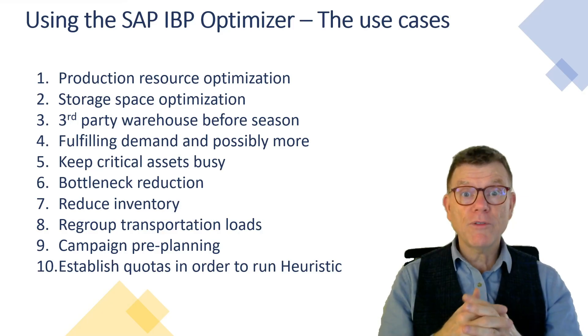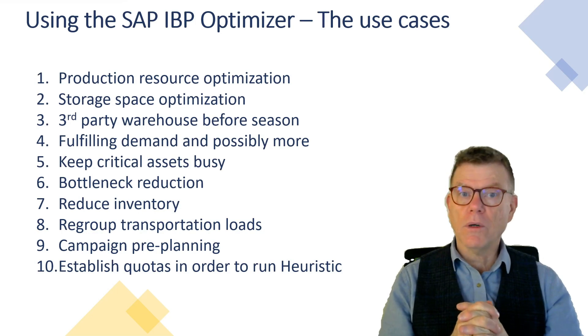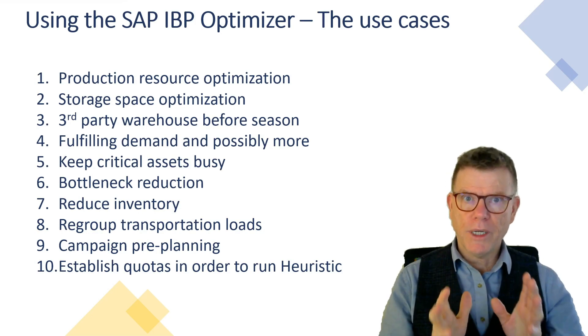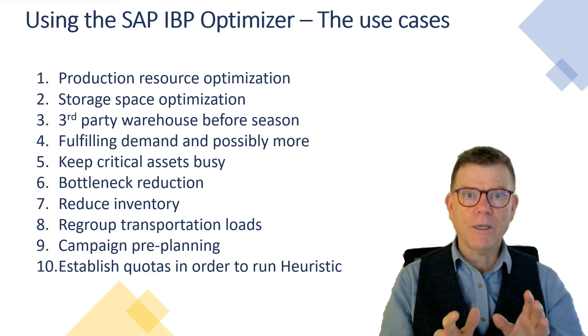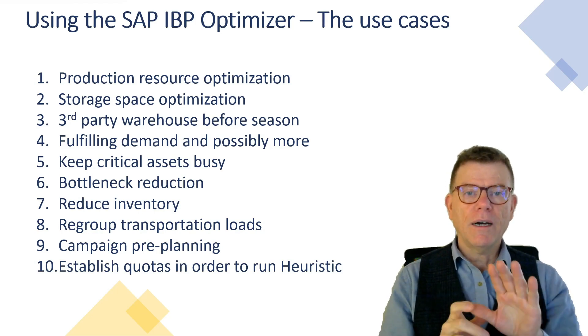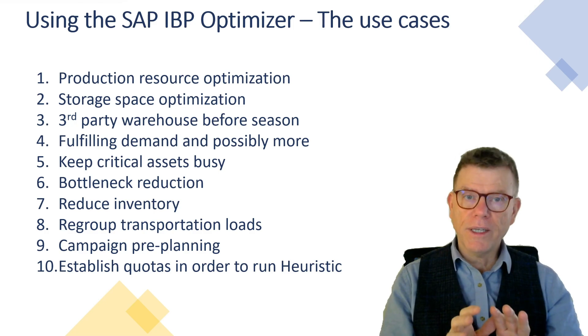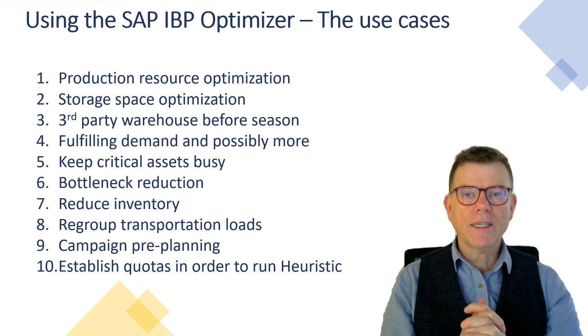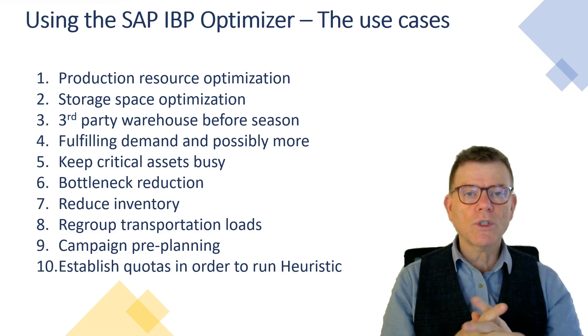What type of business case can we cover with the optimizer? Really many, sincerely many. Here I've listed down only 10. Let's start with the first one: production resource optimization.